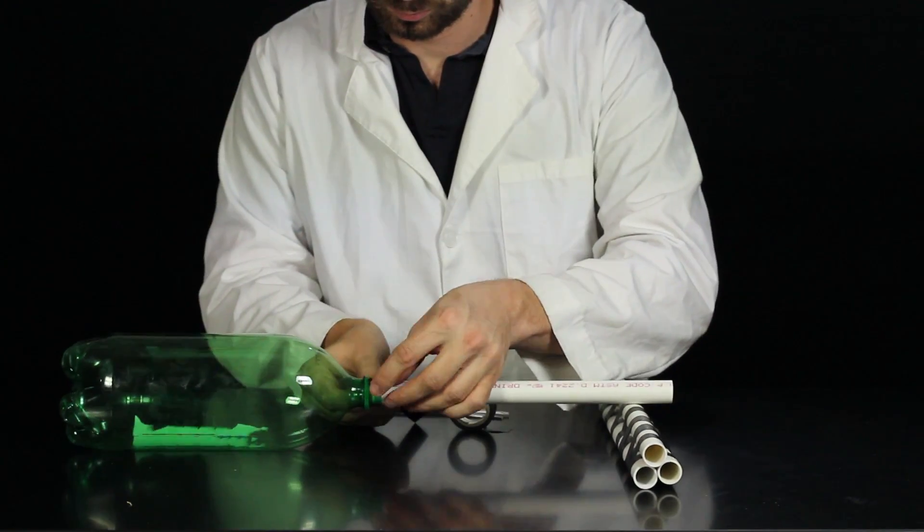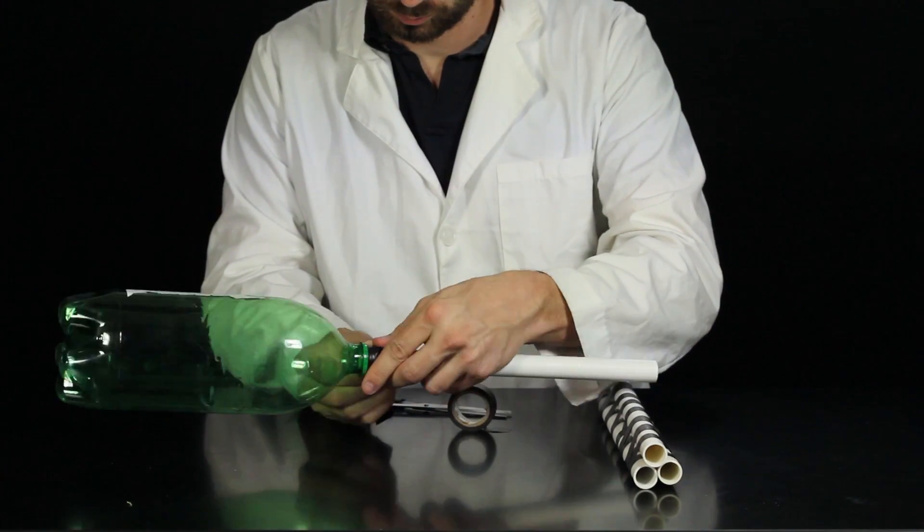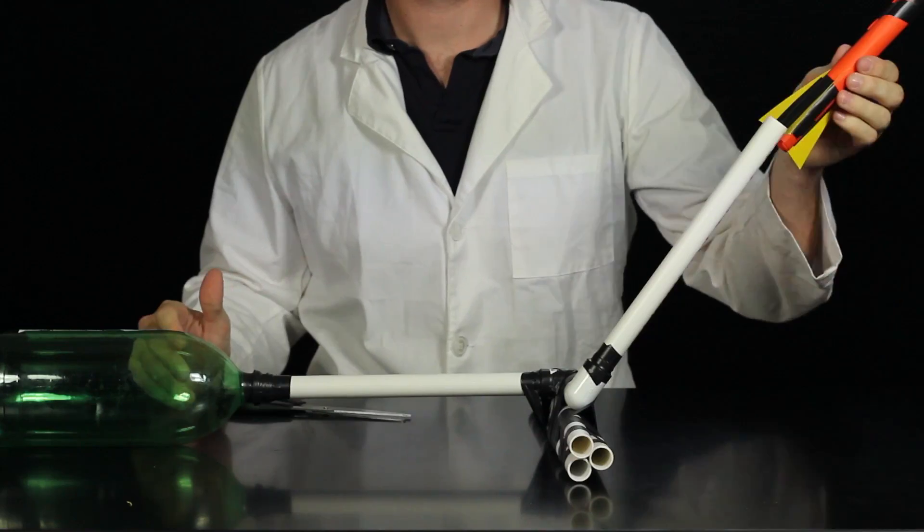Use electrical tape to attach several pieces of 1 1⁄2 inch PVC pipe to the front of a 2-liter bottle. Once you put them together, this will be your rocket launcher.